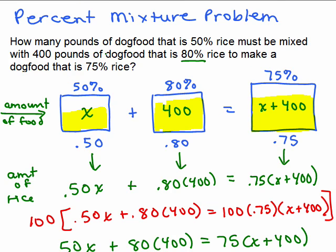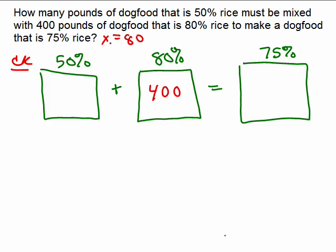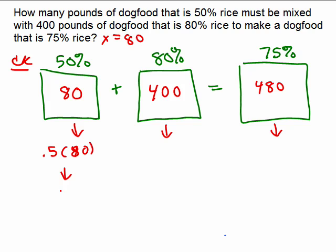Here was our original problem: how many pounds of dog food that's 50% rice must be mixed with 400 pounds of dog food that's 80% rice to make a dog food that's 75% rice? We said X was in the 50% and 400 was in the 80%. Now we know X is 80, so we have to check our work. We've got 80 pounds and 400 pounds mixing together, which means there must be 480 pounds in the final vat. Now let's see how much rice is in each bag: 50% of 80 is half of 80, or 40 pounds.